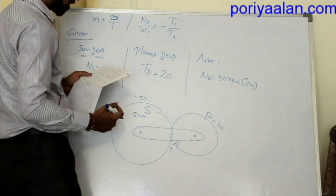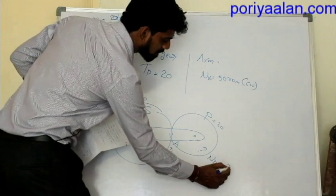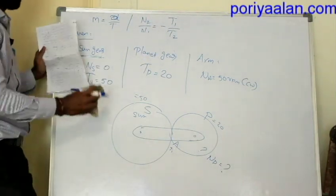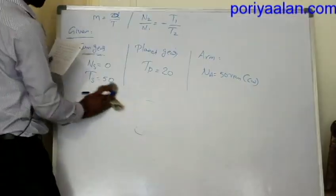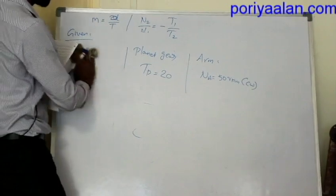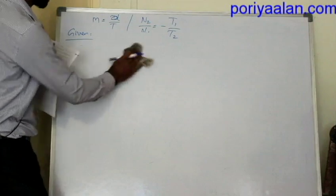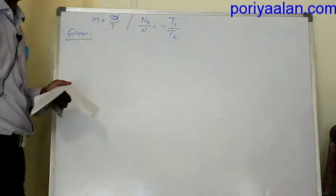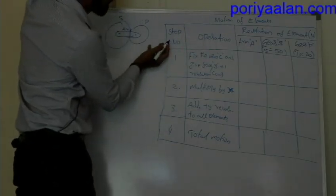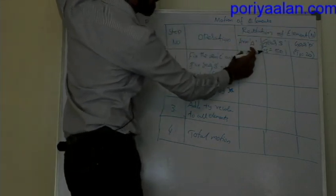To determine the speed of the planet gear, we use the tabulation method. This is the standard tabulation method for epicyclic gear trains. The table has columns: step number, operation, and revolution of each element — arm, sun gear, and planet gear.